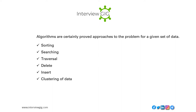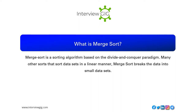Algorithm operations include sorting, searching, traversal, delete, insert, and clustering of data. What is merge sort? Merge sort is a sorting algorithm based on the divide and conquer paradigm. Unlike many other sorts that sort data sets in a linear manner, merge sort breaks the data into small data sets.